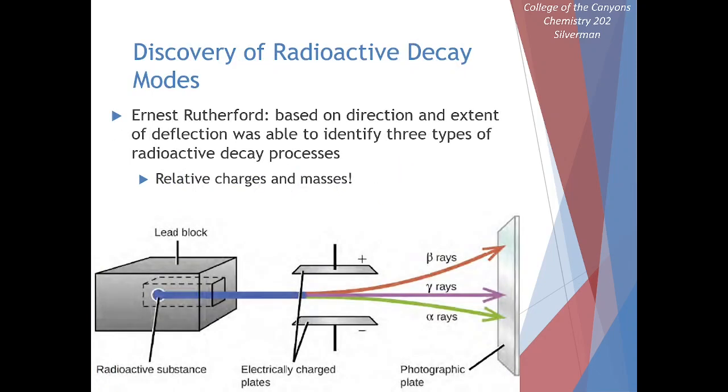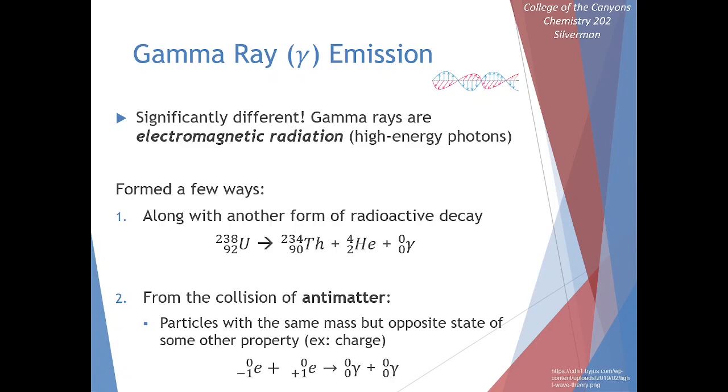The last process we can look at here from our Ernest Rutherford experiment is our gamma ray emission. Gamma rays are electromagnetic radiation. This is a form of light, very, very high-energy light. There are a number of processes that will give off these gamma rays. Sometimes they go along with another radioactive decay process. For example, uranium-238 that we saw before undergoes alpha decay, but it also emits a gamma ray.